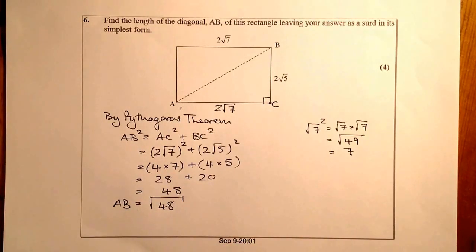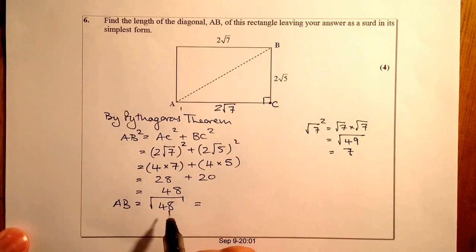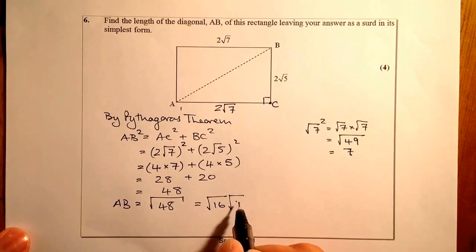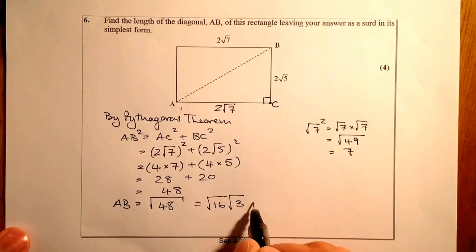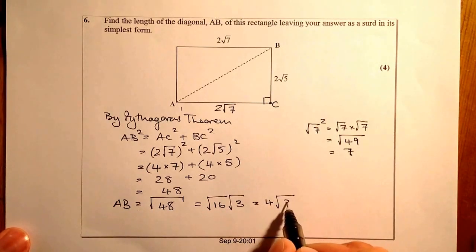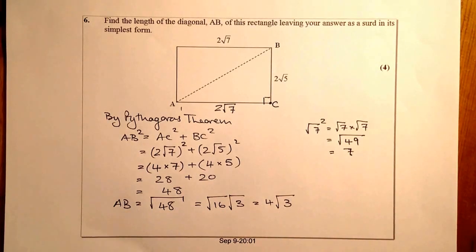And then when I need to simplify that down, I'm going to simplify it by using the surds. √16, √3. And from there, I'm just going to take the square root of 16, which will give me 4, √3 as my final answer.